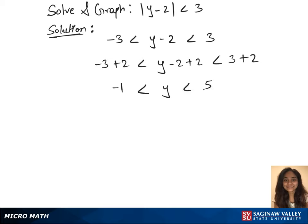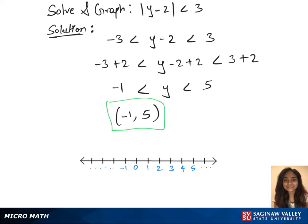Now we have the solution set which is minus 1, 2, 5. We'll plot this on the graph. We'll mark 5 on the graph and minus 1 and join those two points.